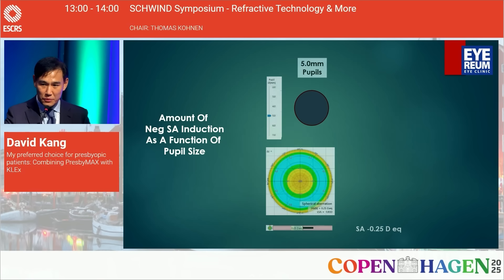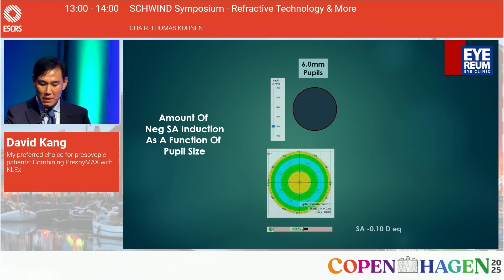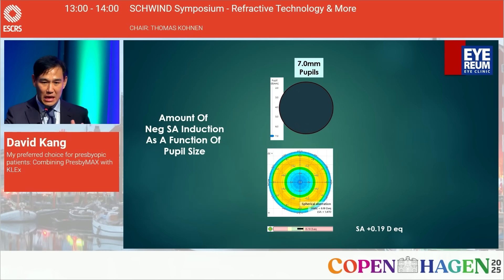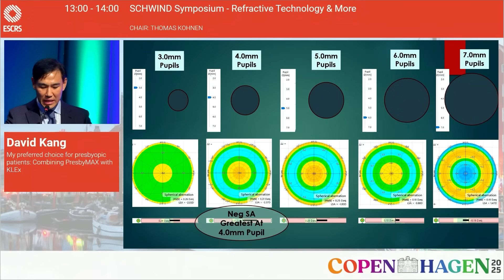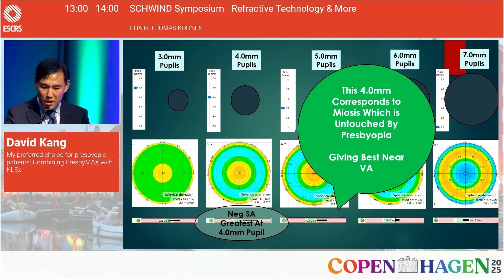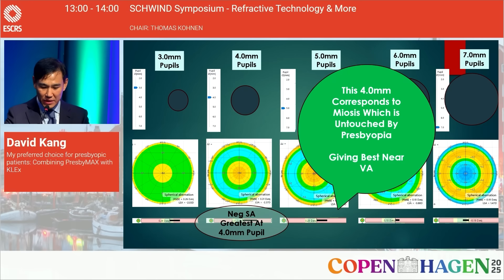At five millimeters, negative spherical aberration drops back to minus one quarter; at six millimeters it is minus one tenth; and at seven millimeters it has been converted to positive spherical aberration. The negative spherical aberration is greatest at the four-millimeter pupil. This corresponds to the miotic effect, which is less affected by presbyopia, giving the best near visual acuity at this particular pupil size.